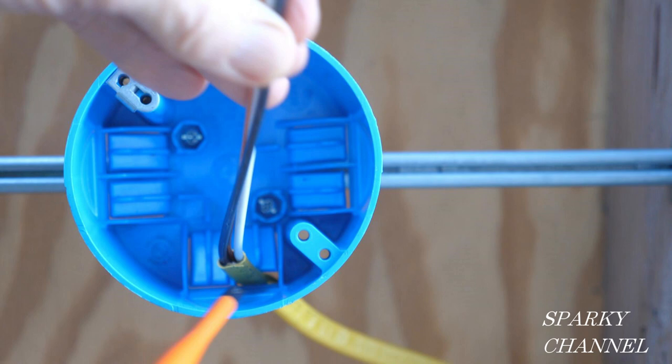And the main argument for the people who feel they shouldn't be is that the manufacturers of these boxes have already included these integral clamps in their box fill calculations. And the main argument that the people have who feel they should be included are that they're interior clamps. You know, they're not exterior clamps. You've got to call them interior.